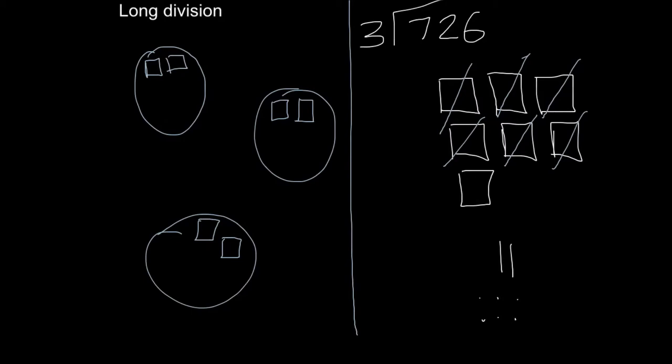Now I have one hundred block left. I can't place that in the groups, otherwise one group is going to have three and the other groups are going to have two. So that means I have a hundred block left over.